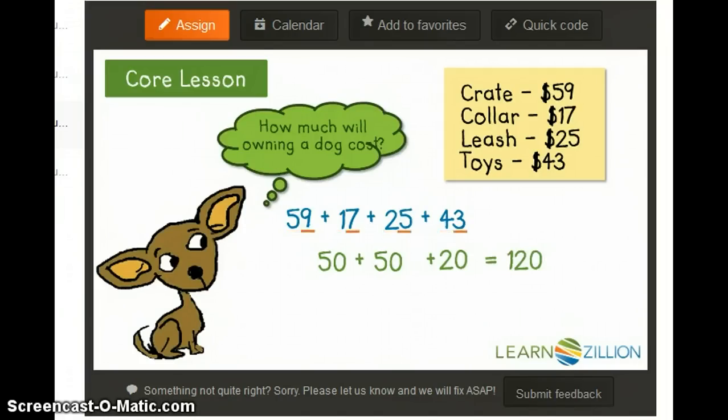I can now add together the ones: 9 plus 7 plus 5 plus 3. If I rearrange the addends, I can add 7 plus 3 together to get 10, and then 9 plus 5 together to get 14. I can easily add 14 plus 10 to get 24.